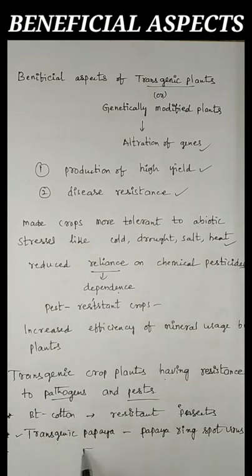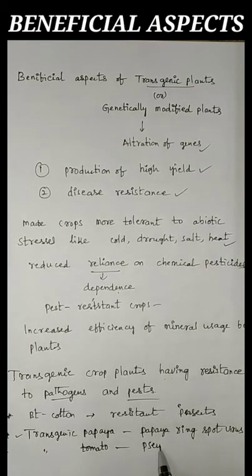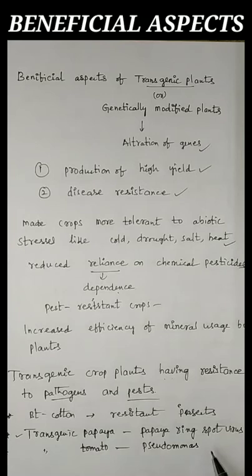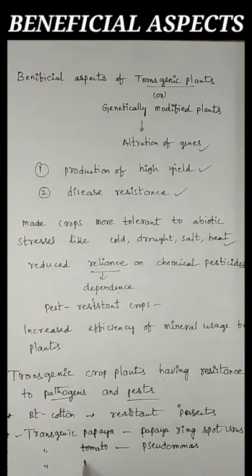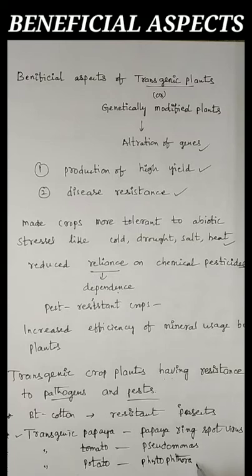Another example is transgenic tomato, which is resistant against the bacterial pathogen Pseudomonas. And another example is transgenic potato, which is resistant against the fungus Phytophthora. These are the different transgenic plants showing resistance against disease-causing agents.